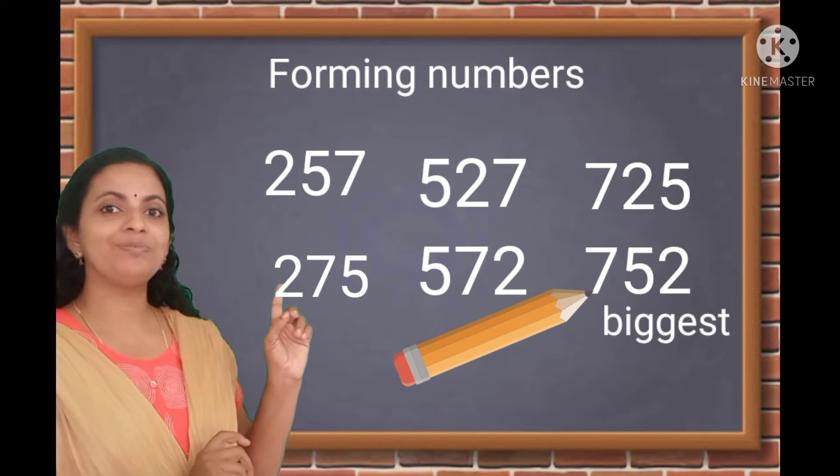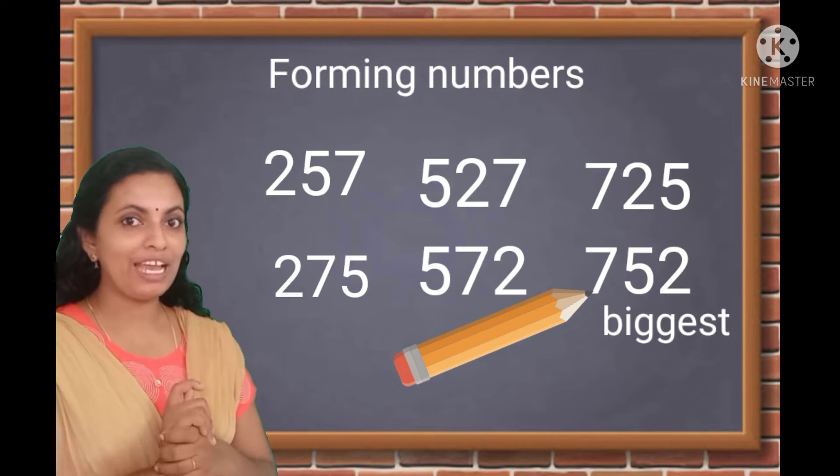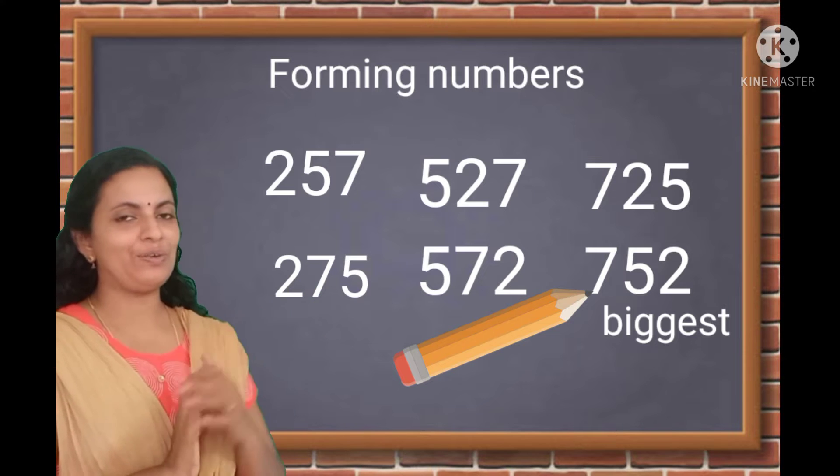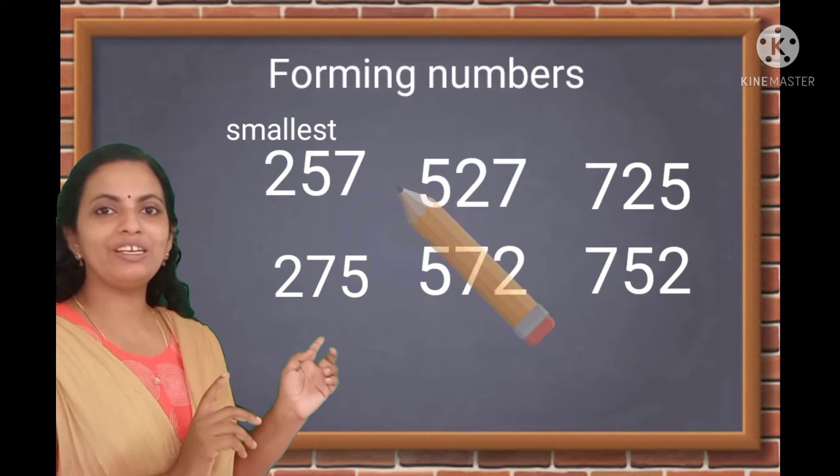Now, tell me, which is the biggest number? Yes, 752. Of course, we have arranged them in descending order. And which is the smallest number? 257. Of course, we arrange the digits in ascending order.